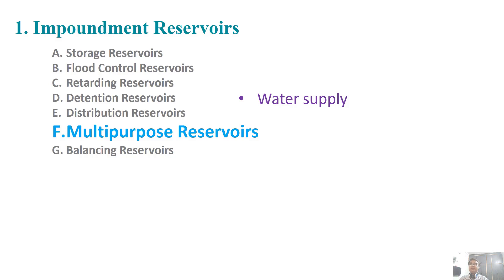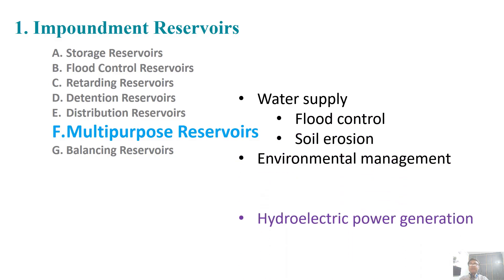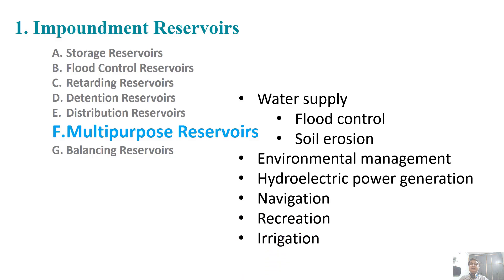A multipurpose reservoir serves more than one purpose during its existence. The purposes can be two or more. For example, it can supply water to the town, it can be used to control floods, it can be used for hydroelectric power generation, it can also be used for navigation purposes, and the dam can be used for irrigation purposes — meaning supplying water to the river system downstream.